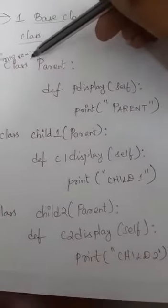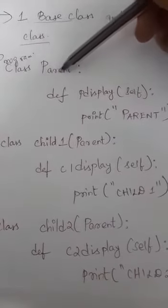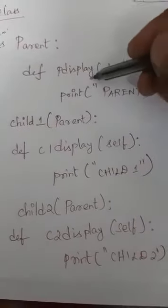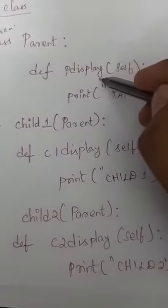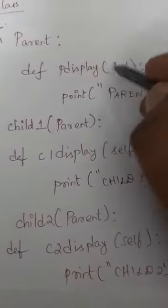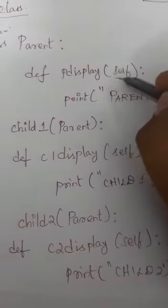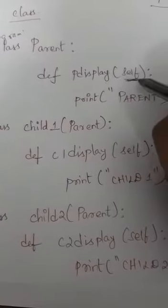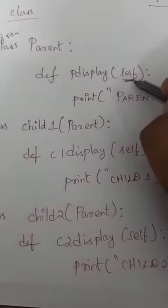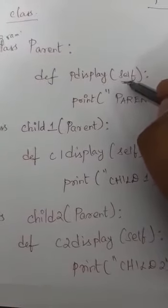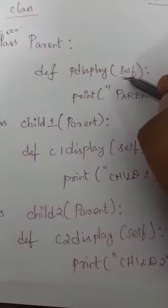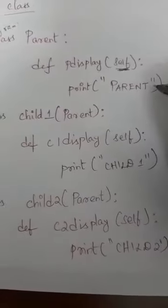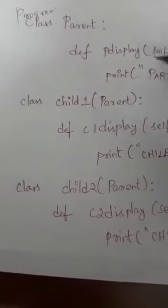First, I am creating a base class. My base class name is 'parent'. Inside the parent class I am declaring a method called 'p_display'. When you declare a method inside a class you need to pass 'self' as the argument. Inside p_display I am printing a message called 'parent'.